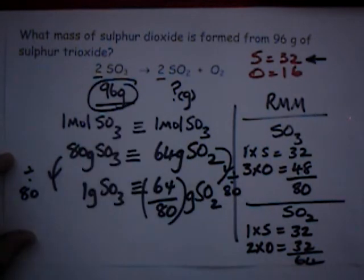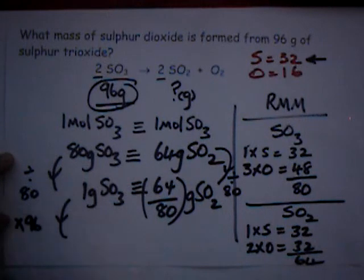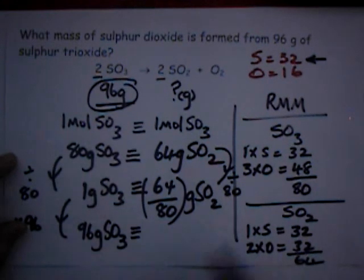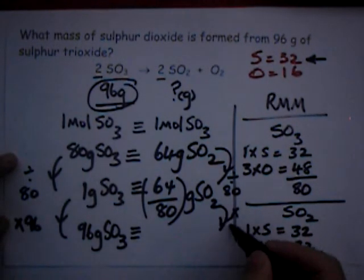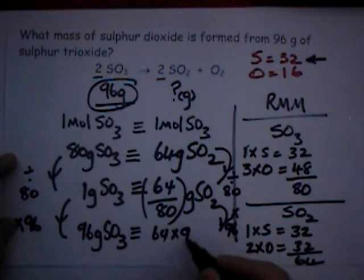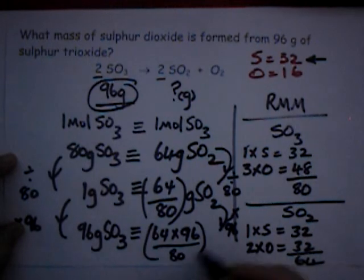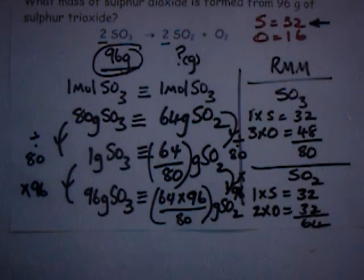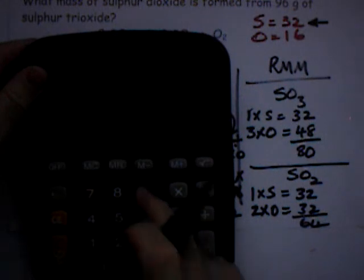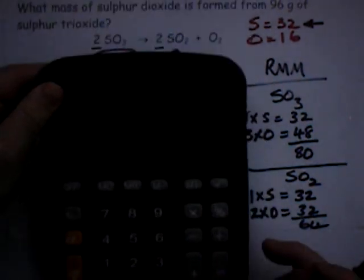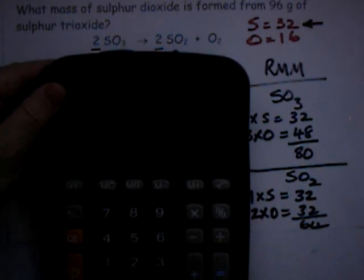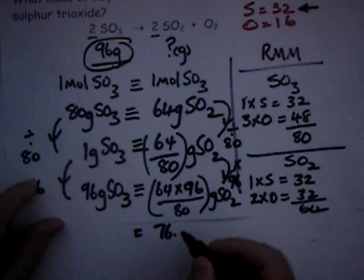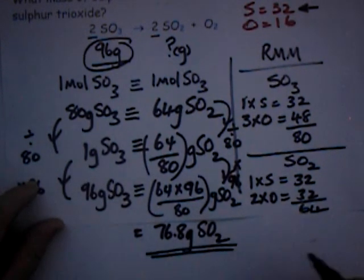Now I can work out what 96 grams would produce. I'm going to multiply this by 96. That will give me 96 grams of SO3. And what you do to one side, you do to the other. So again, I multiply this side by 96. That gives me 64 times 96 divided by 80 grams of SO2. Let's work that out. That gives me 76.8, and that's the answer.